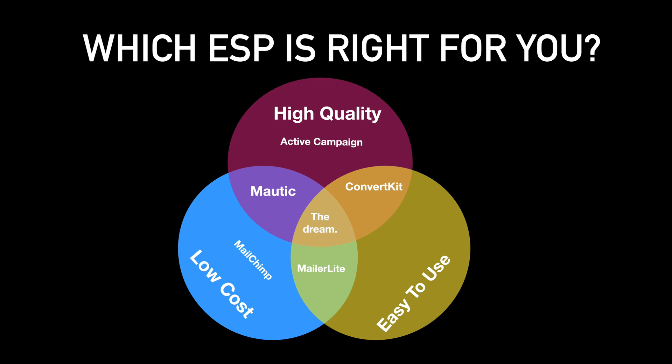But Mautic isn't right for everyone, and choosing an ESP that is right for your business is crucial to your success. Here is a Venn diagram of marketing automation tools. We have things like ActiveCampaign, which are extremely high quality, but also cost prohibitive for a lot of people. We also have very low cost options — downright free if you stay under 2,000 subscribers with something like MailChimp. We also have very easy to use but also high quality applications like ConvertKit, but they get a little bit spendy. Mautic is going to live somewhere in between: high quality but low cost, so it's not going to be the easiest tool to use, which will help you decide if it's right for you.